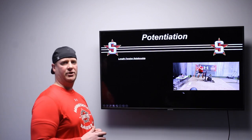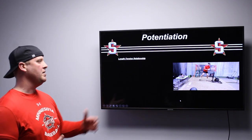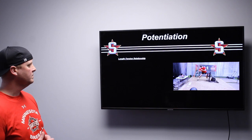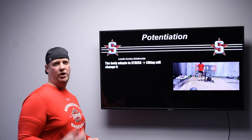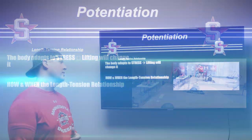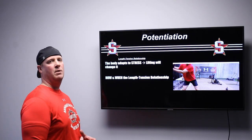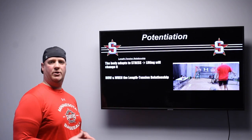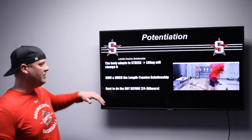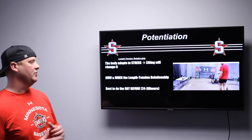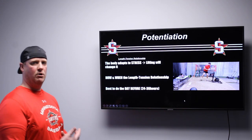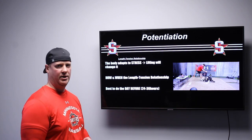We can also go into changing the length-tension relationship. This is going to be a lift that might be done prior or the day prior to the event that you're trying to improve. The body adapts to stress and lifting will change it. How and when to change the length-tension relationship is very key. You're trying to tighten up muscles for the time that you want — the game or that bullpen. Best to do it the day before, within the 24 to 36 hour time window. If you get past 36 hours, you're going to get more soreness rather than tightness, and it might hinder the performance.